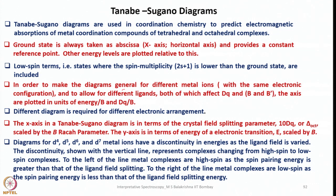To make the diagram general for different metal ions with the same electronic configuration and to allow for different ligands of different ligand field strength, both of which affect Δ and B and B prime, the axes are plotted in units of energy by B and Δq by B. By doing this, in one Tanabe-Sugano diagram we can consider the entire band of ligands we come across in the spectrochemical series.